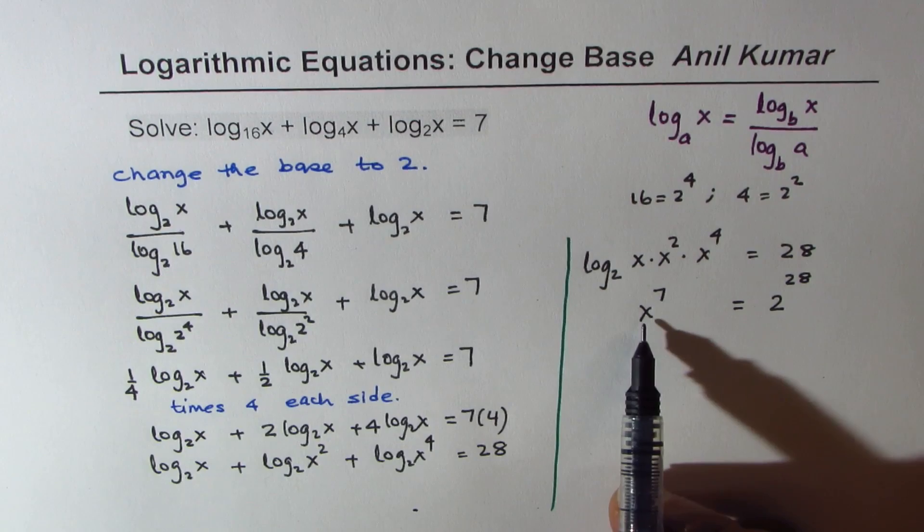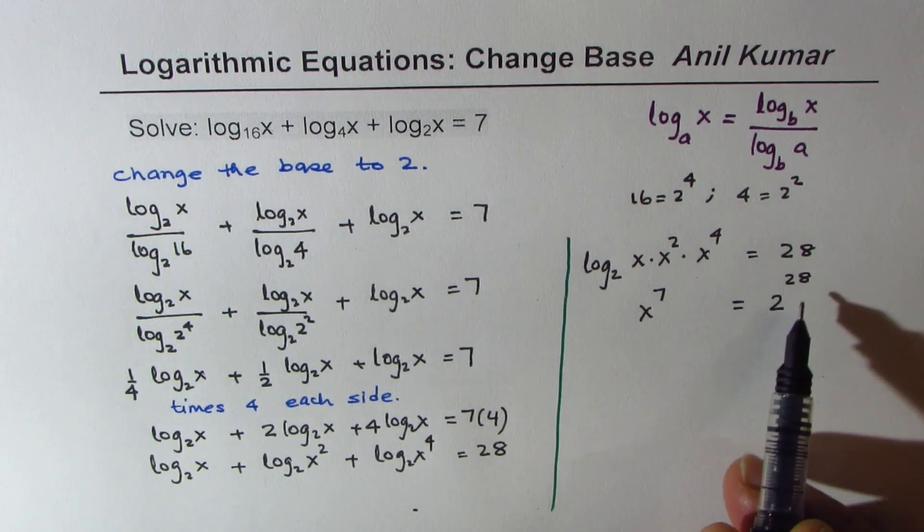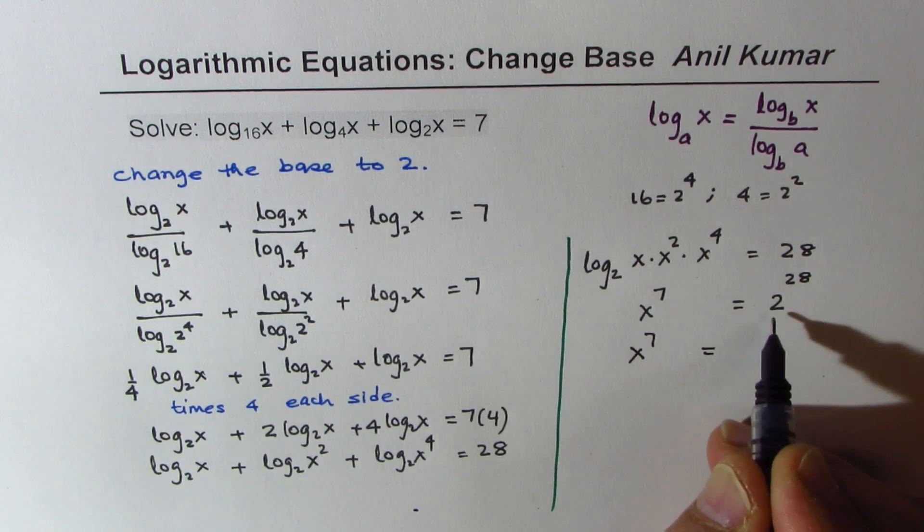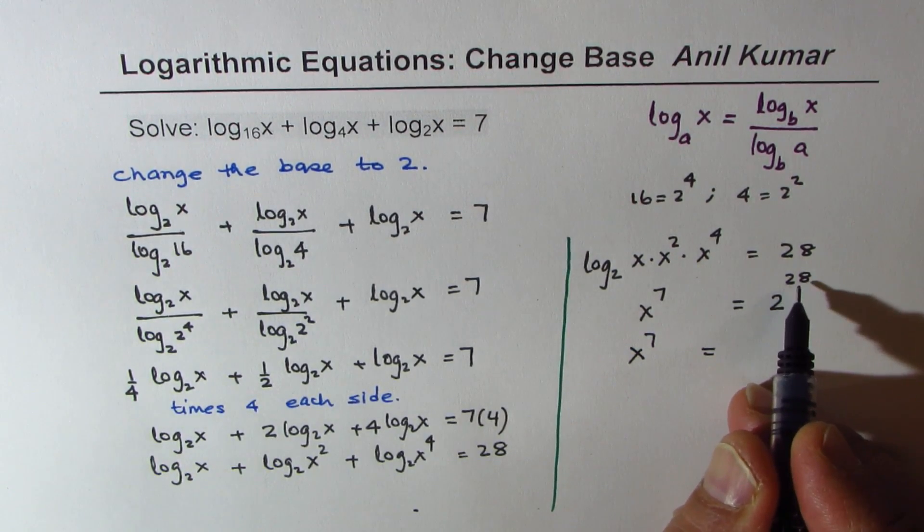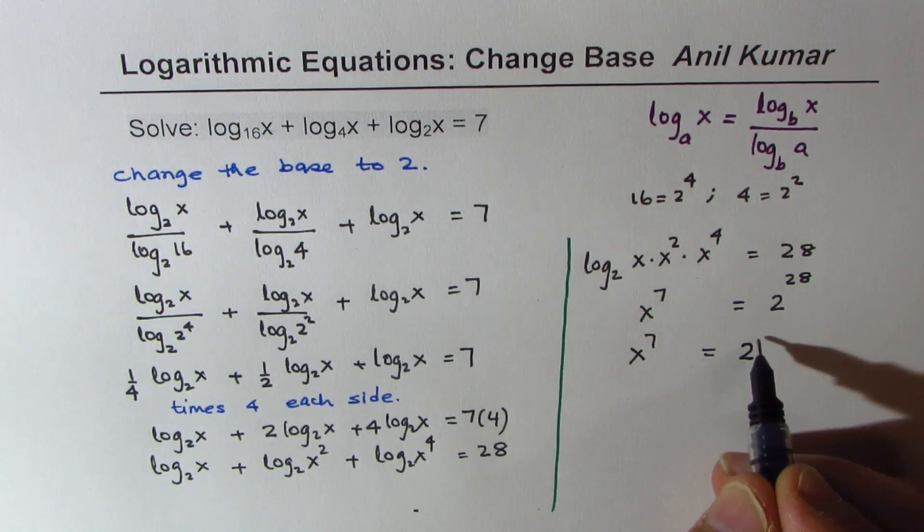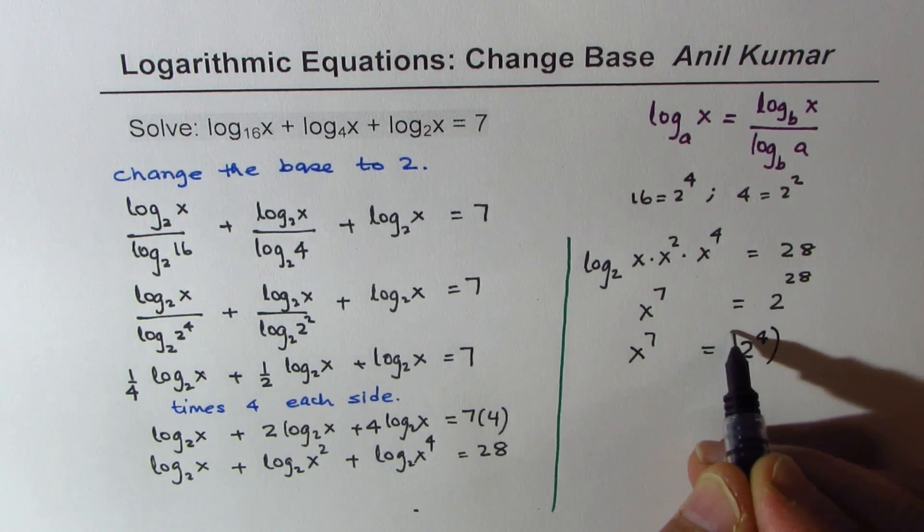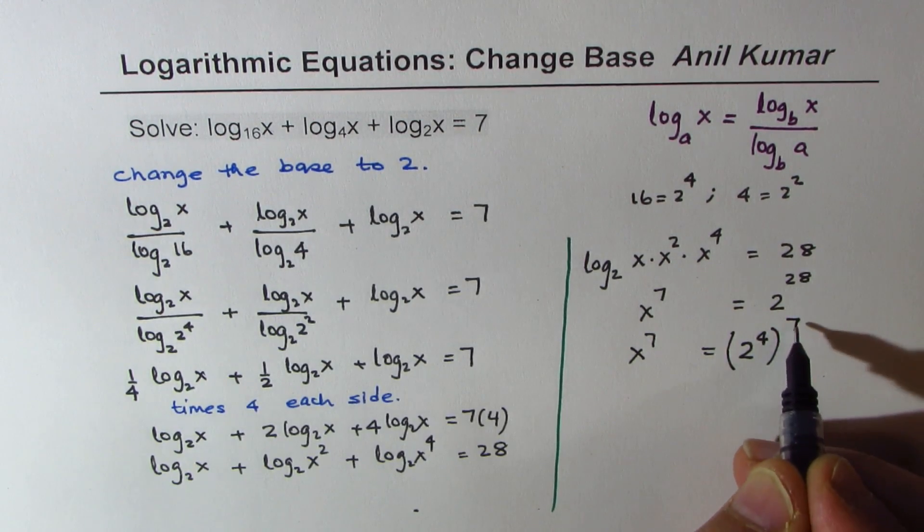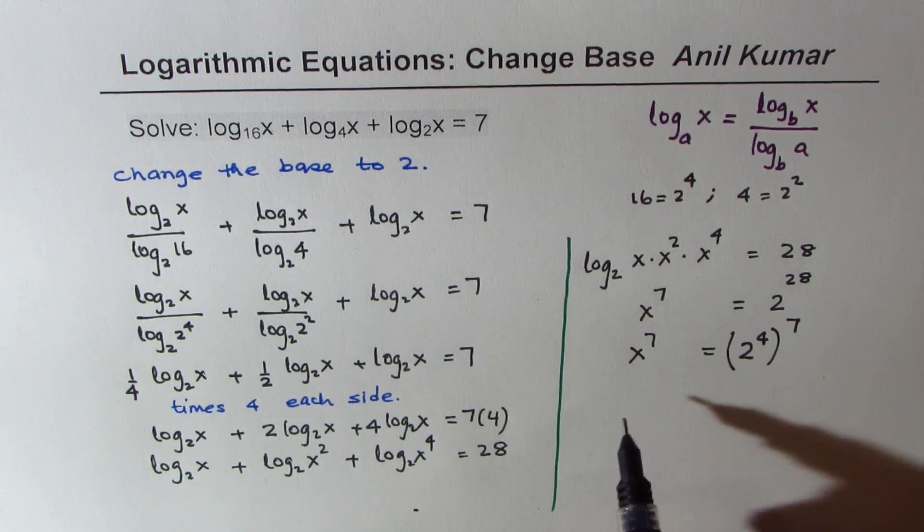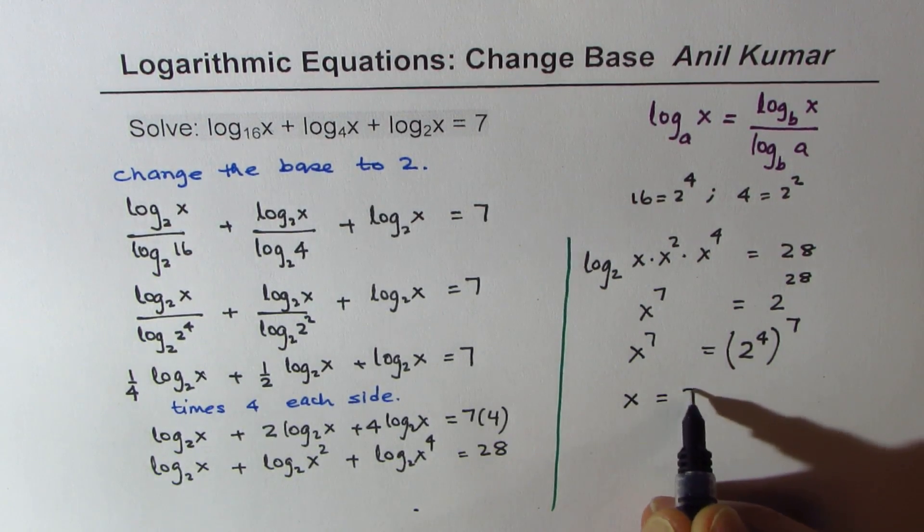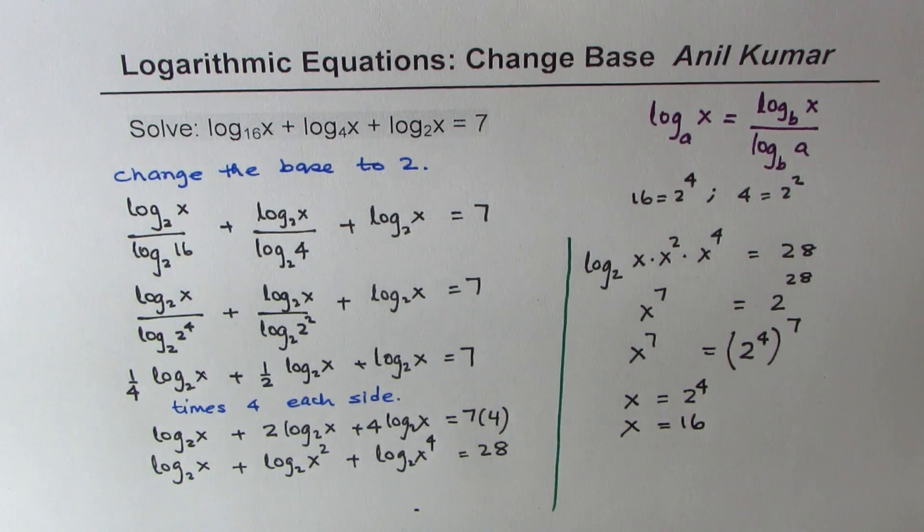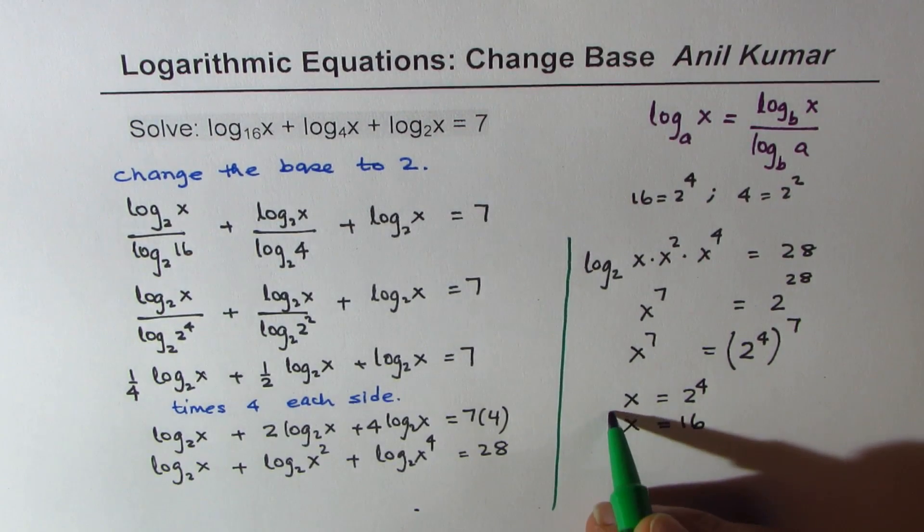Now to find the value of x we could write something to the power of 7. So on the right side I could actually write this as 28 as a multiple of 7 and 4. So I could write this as 2 to the power of 4 to the power of 7. 7 times 4 is 28. Now if you compare, you get your solution that x equals 2 to the power of 4, which is 16. So x equals 16.